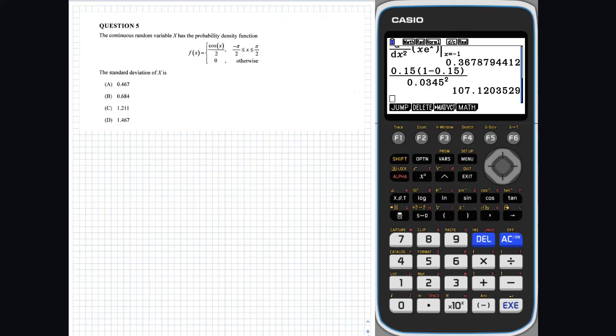Question 5. To determine the standard deviation of x, we need to first evaluate the mean as follows. Now, as f of x is non-zero between negative pi on 2 to pi on 2, these will be the bounds of the integral.